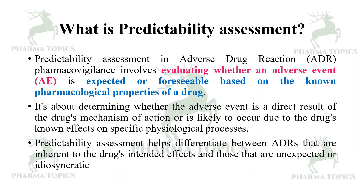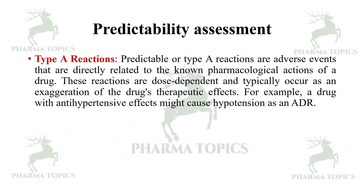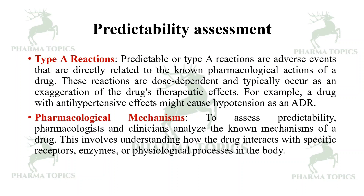Predictability assessment helps differentiate between adverse events that are inherent to the drug's intended effects and those that are unexpected or idiosyncratic. Type A reactions — also called predictable reactions — are adverse events directly related to the known pharmacological actions of the drug. These reactions are dose-dependent and typically occur as an exaggeration of the drug's therapeutic effects. For example, a drug with an antihypertensive effect might cause hypotension at increasing dose levels.